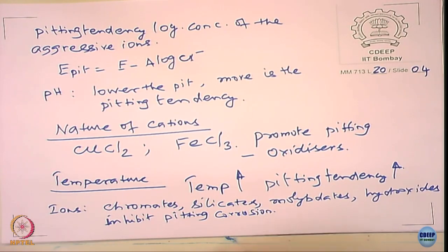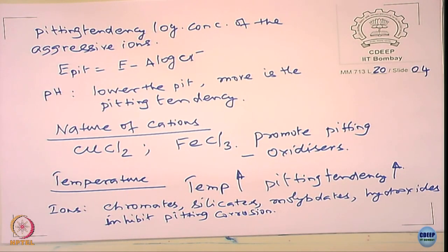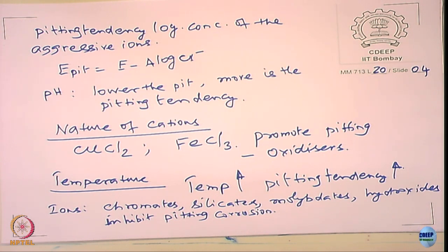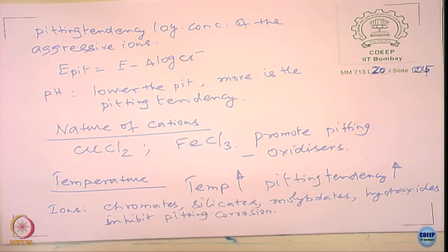Some ions — chromates, silicates, molybdates, and even hydroxides — inhibit pitting corrosion. In fact, for aluminum alloys, to improve pitting resistance, they give conversion coatings with chromates. Chromates indeed promote resistance against pitting corrosion of aluminum alloys.